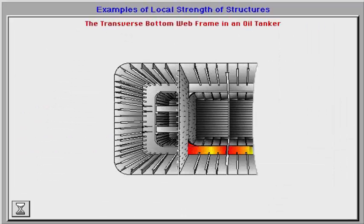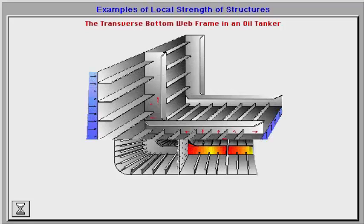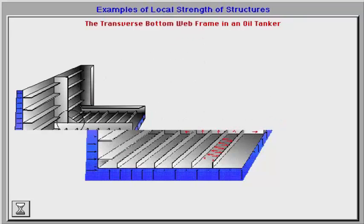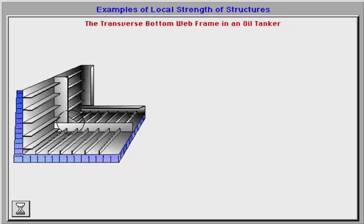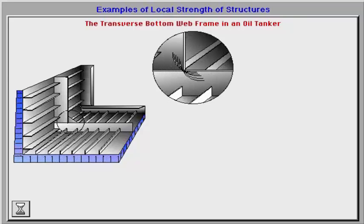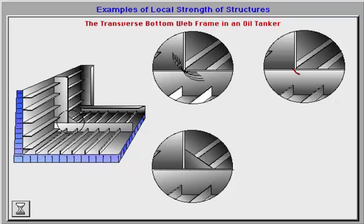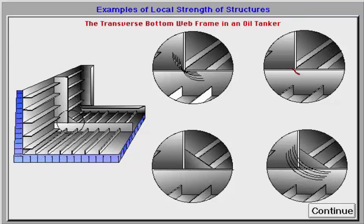We will now study the transverse bottom web frame in an oil tanker. Water pressure is acting at the bottom and liquid pressure is acting on the side of the tank. The forces are distributed to the girders and stiffeners. The change of direction of the girder results in stress concentration at the transition, which may lead to cracks. To avoid stress concentration, brackets are introduced to smooth the transition areas in the construction.